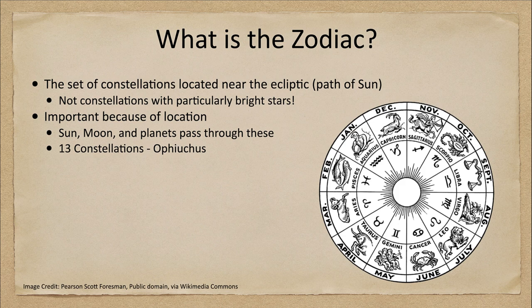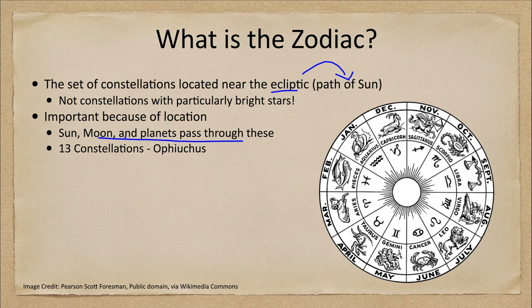The zodiac is those constellations that are located near what we call the ecliptic. The ecliptic is the path of the sun in the sky, so these are the constellations that the sun, the moon, and planets will actually pass through over the course of a year. They are constellations that are important because of where they're located, not because they have bright stars in them — though a handful do have relatively bright stars, many of them are very faint constellations.